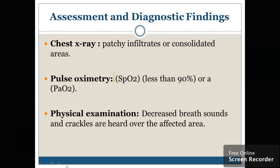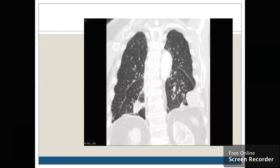How are we going to do the assessment and diagnostic findings? First of all, we take the history and physical examination — we have to ask the patient about their condition or any prior disease. Then we go for pulse oximetry to check the saturation of the patient; the patient's saturation will definitely be less. Then we go for the chest X-ray to see patch infiltrates or consolidation areas. On X-ray or CT scan, we will see the black part of the lung where no expansion is present — this is where you can see the heart and lungs and identify the area with no lung expansion.